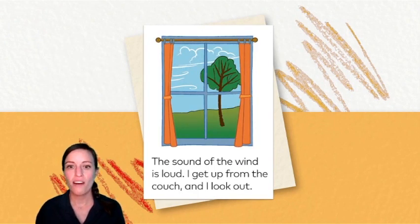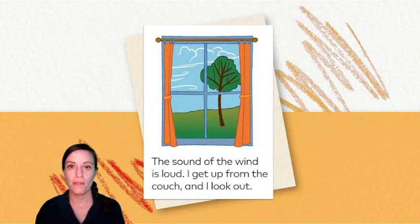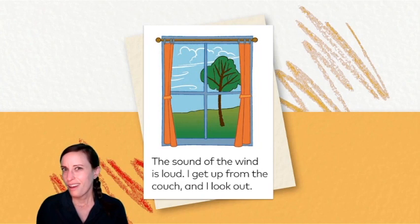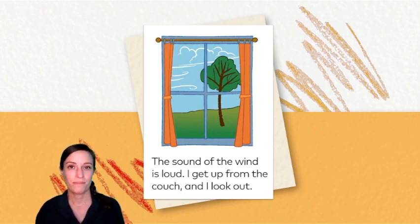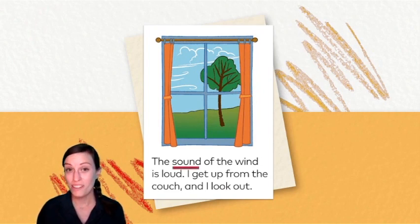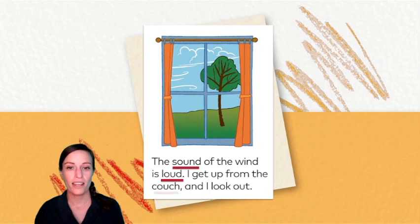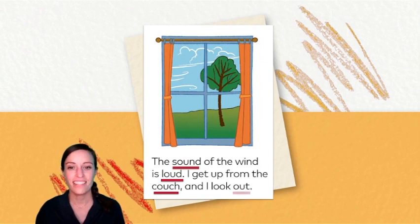The sound of the wind is loud. I get up from the couch. And I look out. What words with the vowel team OU did you spot? Sound. Loud. Couch. And there's one more — out.